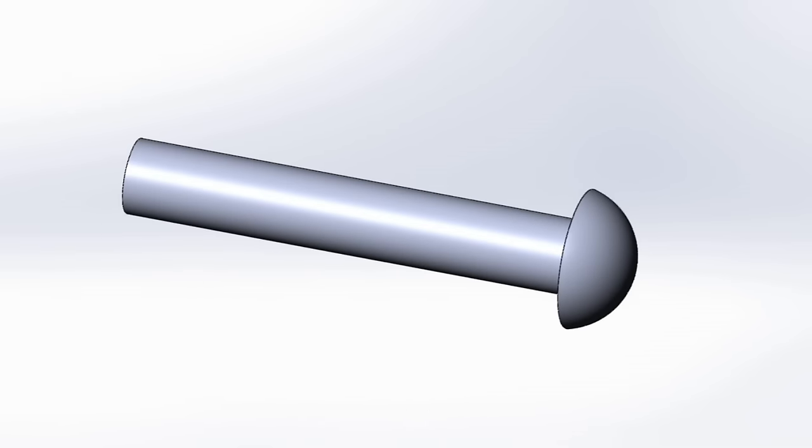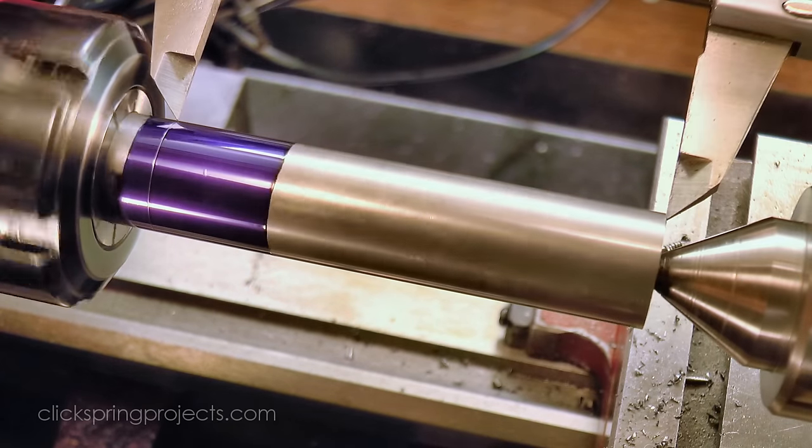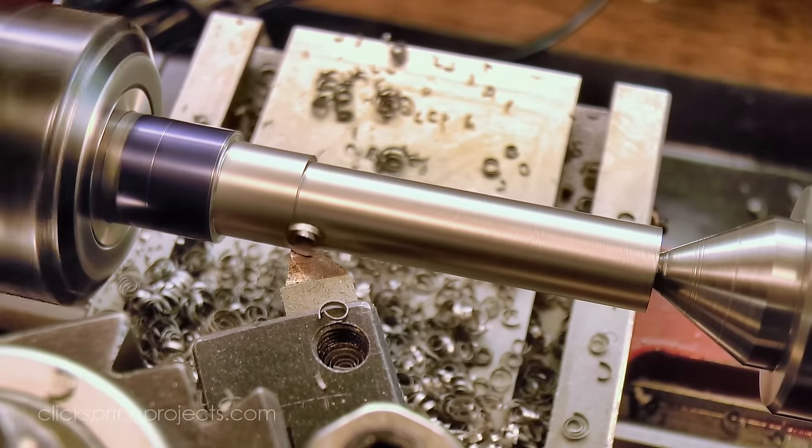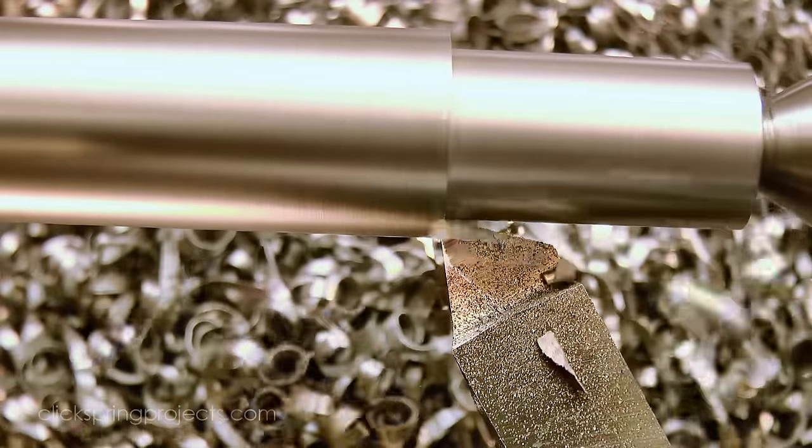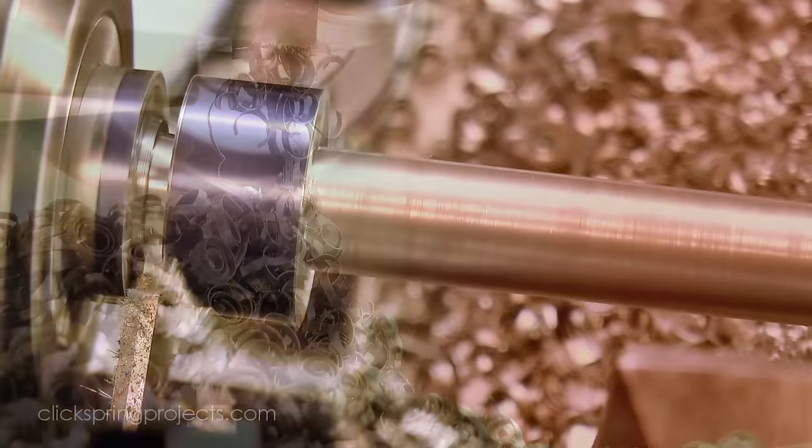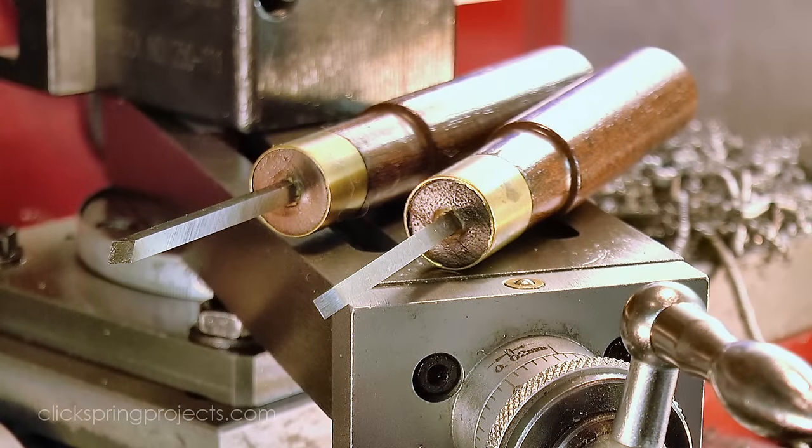And next up is the pin itself, which was a reasonably straightforward piece of turning, although the diameter of the pin does need to be accurate to be a good snug fit in the hole. Once the diameter was sorted, I parted off and then used these gravers to form the dome section on the other end.